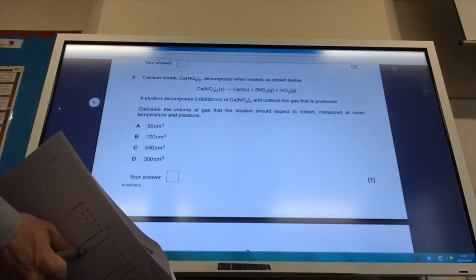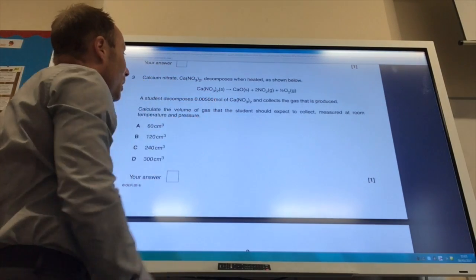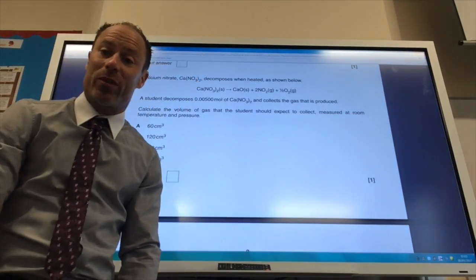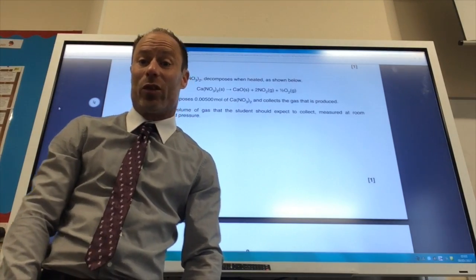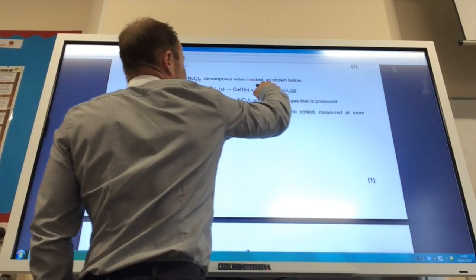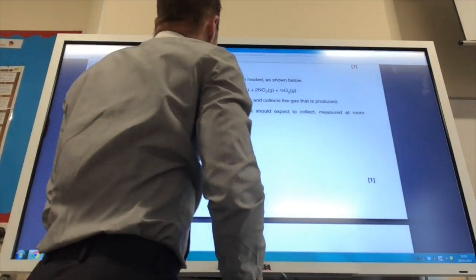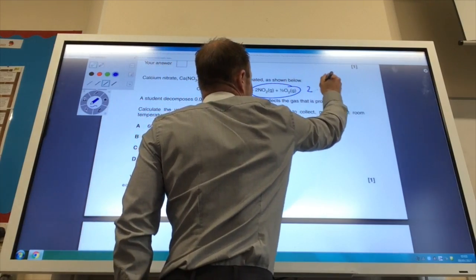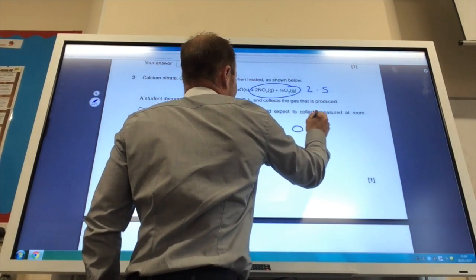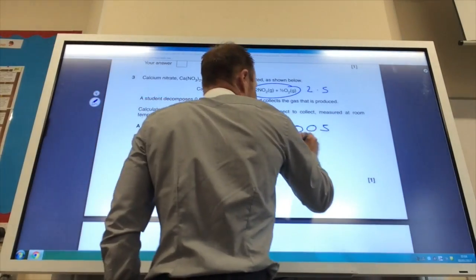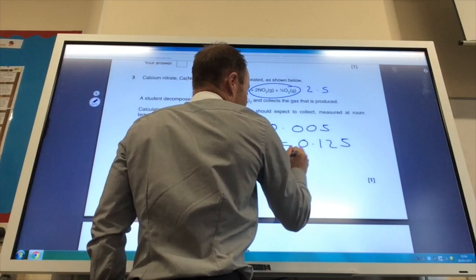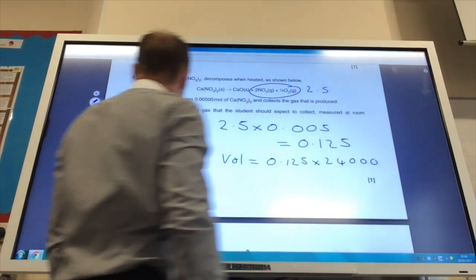I've got some calcium nitrate decomposing. A student decomposes 0.005 moles of calcium nitrate and collects all the gas, and it wants me to calculate the volume of gas collected at room temperature and pressure. Because it's at room temperature and pressure, I can use the equation that one mole of any gas occupies 24,000 cubic centimeters. I need to find out how many moles of gas I'm going to produce. I make nitrogen dioxide and oxygen gas, so in total I make 2.5 moles of gas for every one mole of that. The moles of gas produced is 2.5 times 0.005, which gives me 0.0125. Then to find out the volume of gas, I times that number by 24,000, and the answer is 300 cubic centimeters, which is D.